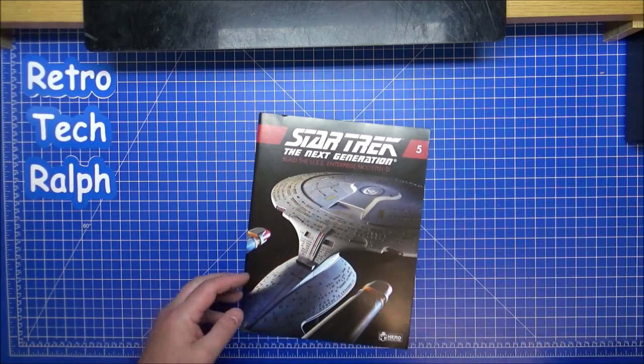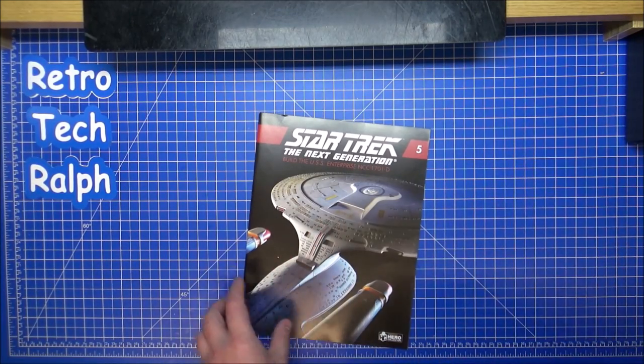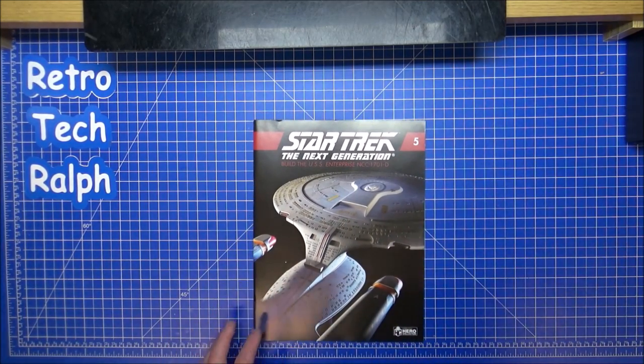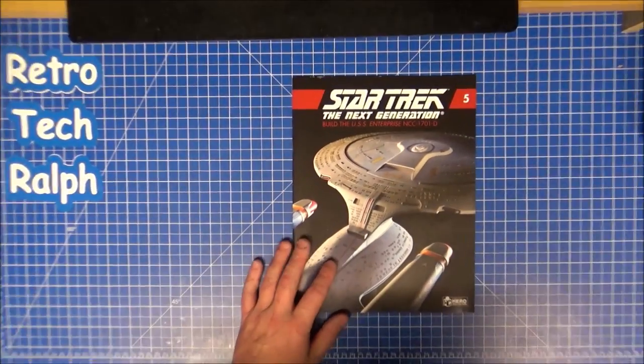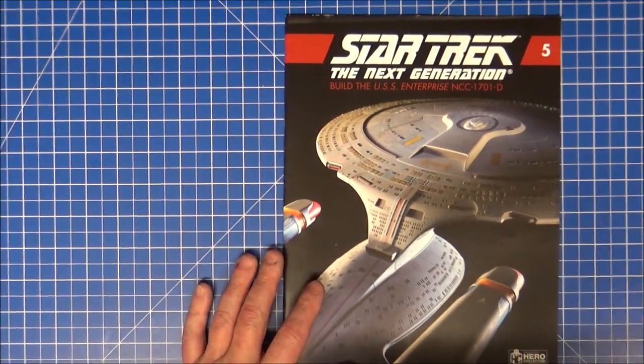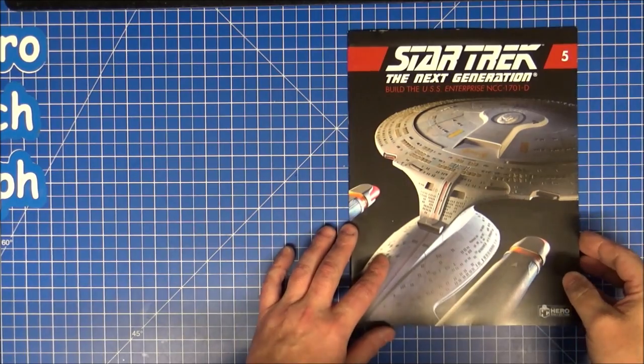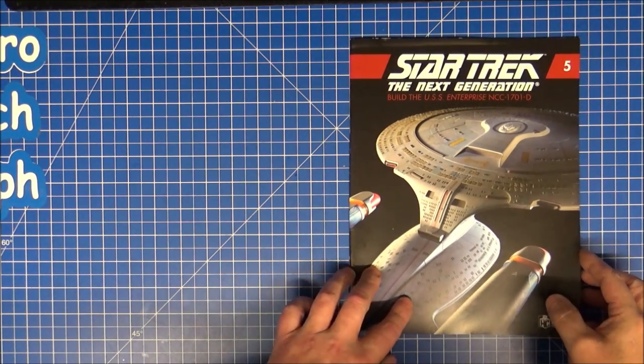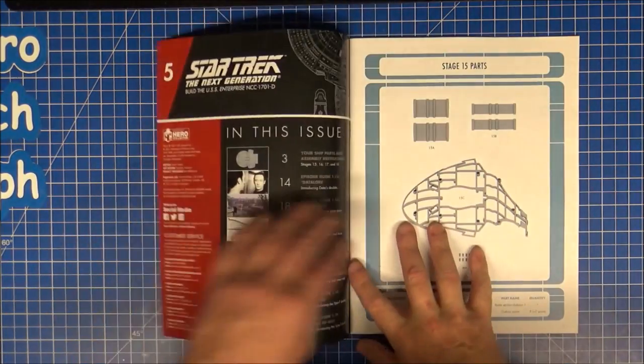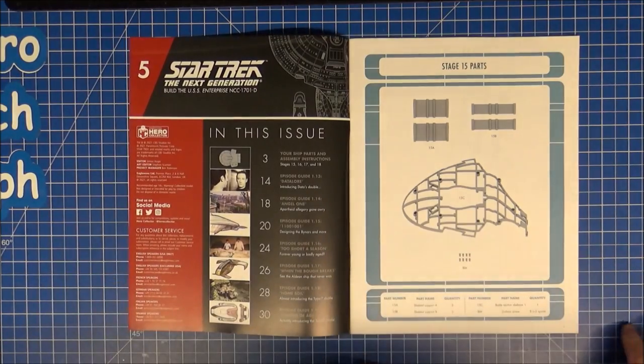I'm still missing the screwbox, which is an absolute pain because all the spare screws I'm getting, I can't put them anywhere. So without any further ado, let's get into looking at the magazine. Number five, lots of interesting parts I'll show you in here.